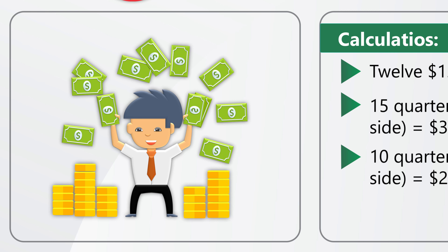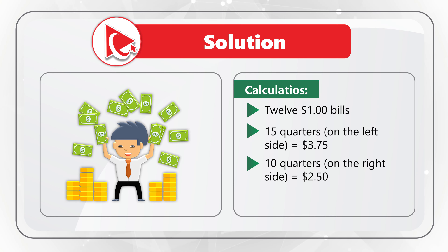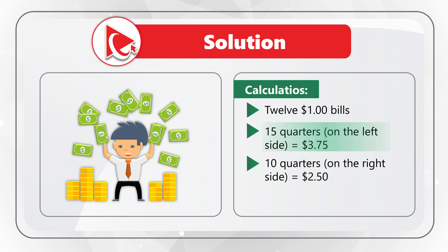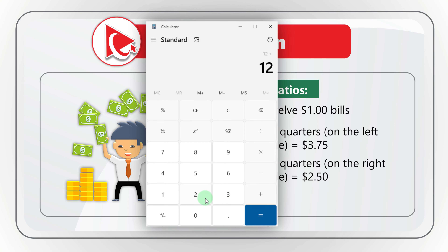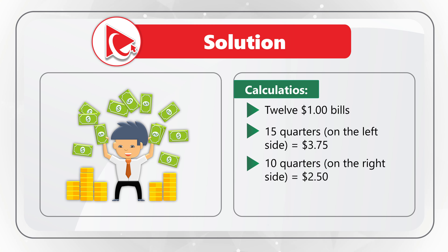Now we are ready to do the math. 12 one-dollar bills equals $12. 15 quarters equals $3.75. 10 quarters equals $2.50. $12 plus $2.50 plus $3.75 equals $18.25. The correct answer is choice C, $18.25. Did you count differently? Please post your solution in comments.